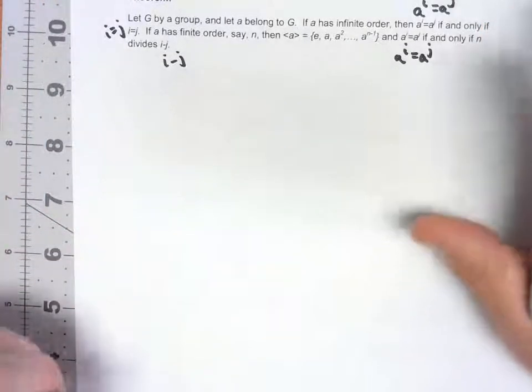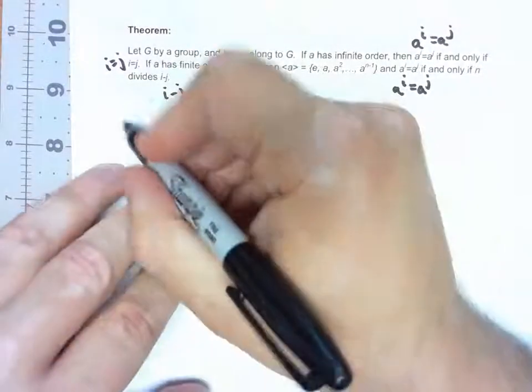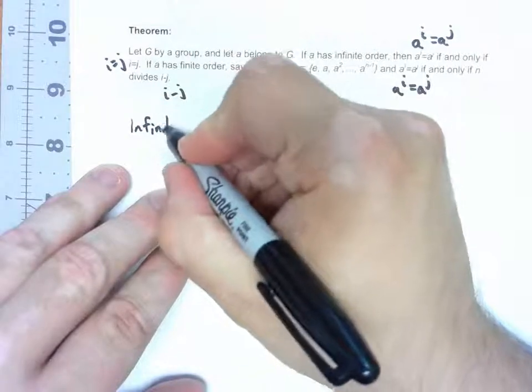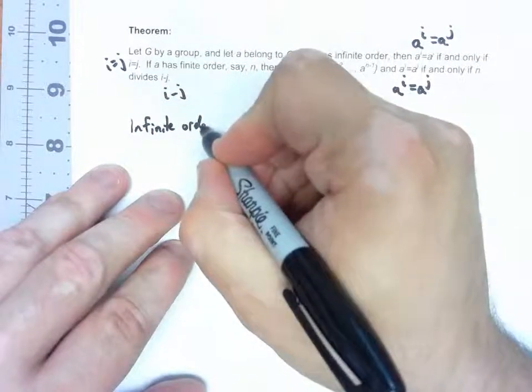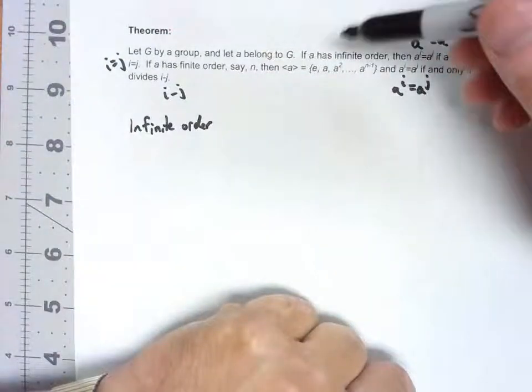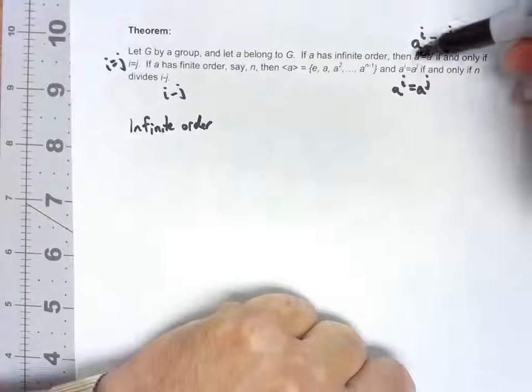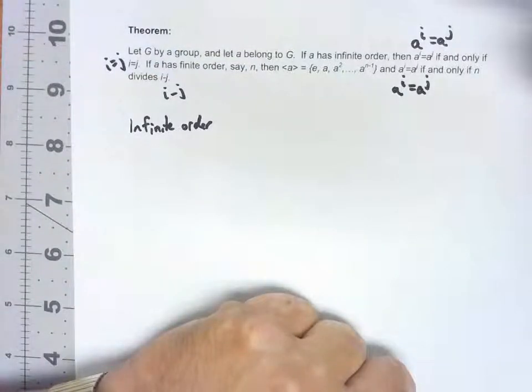There's a whole bunch of parts to this. So let's start with the infinite order case. I want to show that if we've got this group with infinite order and two things are equal, the only way that can happen is if their powers were equal.